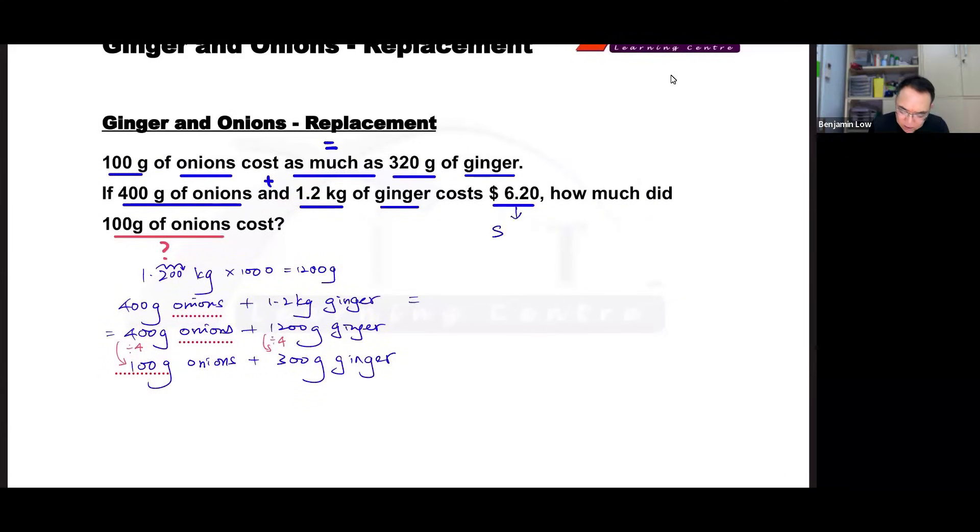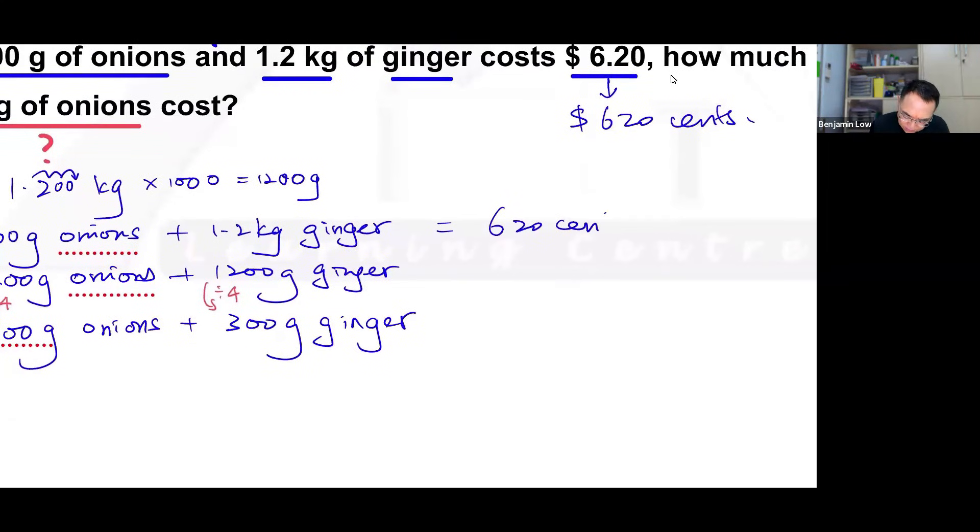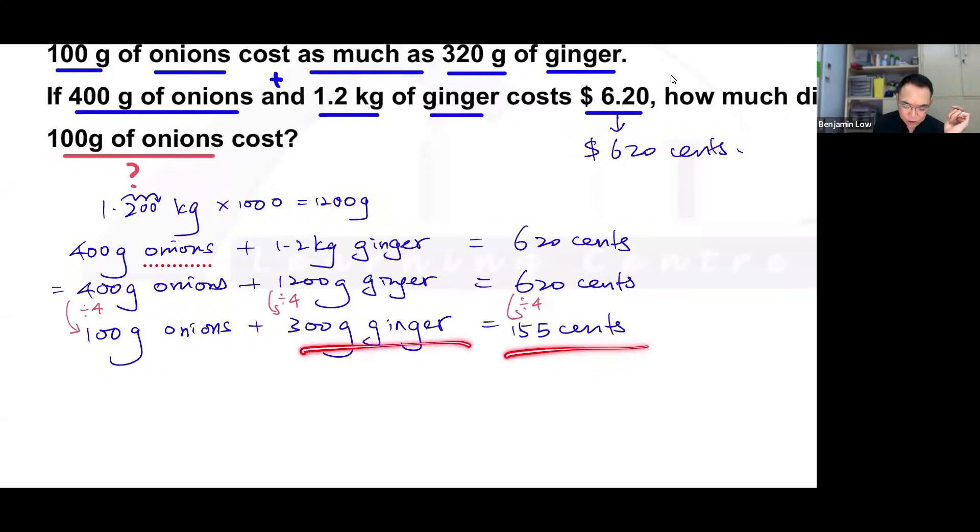So $6.20 is 620 cents. So if I put here 620 cents, same here. And I also divide this by four. As I told you, we need to divide everything. So 620 cents divided by four, let me just make sure of the number, I should get 155 cents. And this would be the price of 300 grams of ginger and 100 grams of onions.